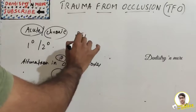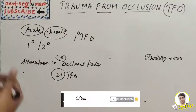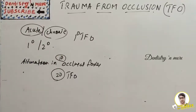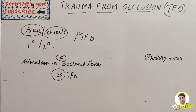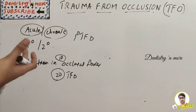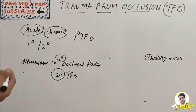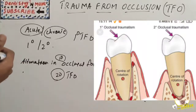Primary TFO includes tissue reaction (damage) elicited around a tooth with normal height of periodontium. It occurs when trauma from occlusion is considered the primary etiological factor in periodontal destruction, and occlusion results in only local alteration of teeth. Parafunctional habits can also result in primary TFO. Common examples include periodontal injury around previously healthy teeth after filling or prosthetic replacement creating excessive force on abutment or antagonist teeth, drifting of teeth into spaces from unreplaced missing teeth, or orthodontic movement into functionally unacceptable positions.